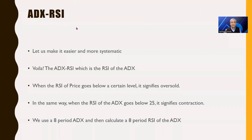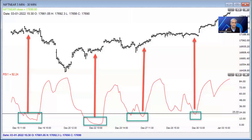We can create an RSI of the ADX and then say: if the RSI of the ADX has fallen below 25, it's a contraction — a non-trending environment. The next step after a non-trending environment is a trend. Once it crosses 25 on the upside, this is a sign that the trend is starting — get into it.